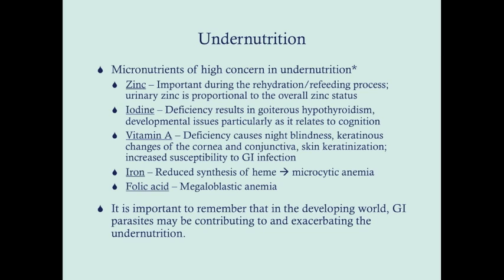Micronutrients of high concern in undernutrition — when someone isn't getting enough food, they're probably going to be deficient in many micronutrients. The ones of highest concern are zinc, which is important during rehydration and refeeding; urinary zinc level is proportional to overall zinc status. Another is iodine — deficiency leads to goiterous hypothyroidism and can also lead to mental retardation and growth stunting.